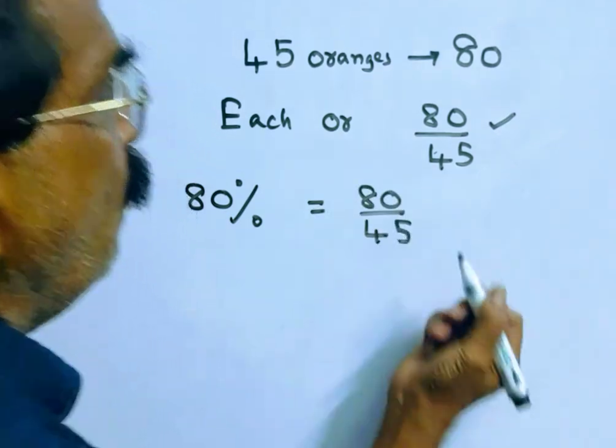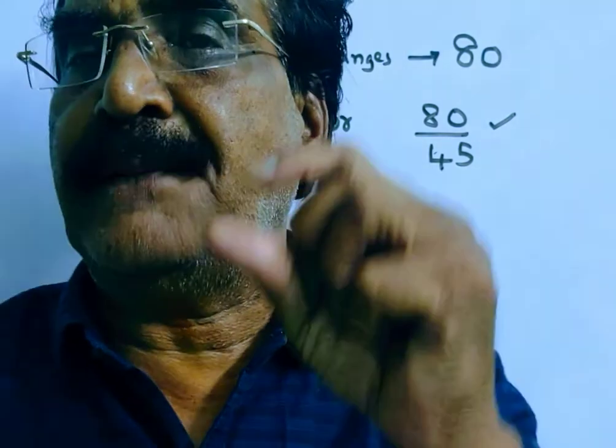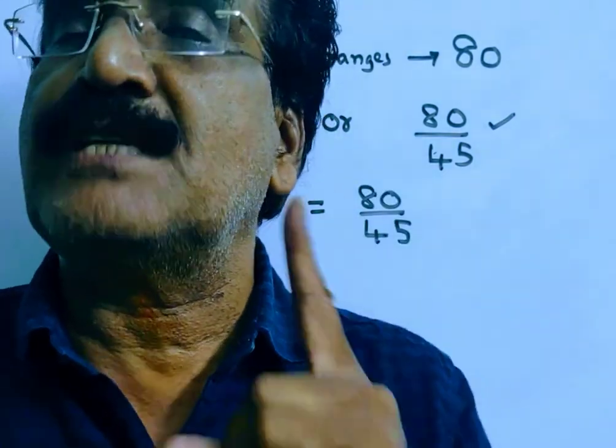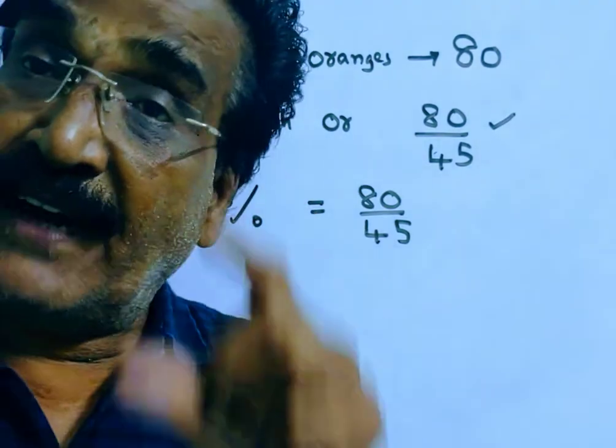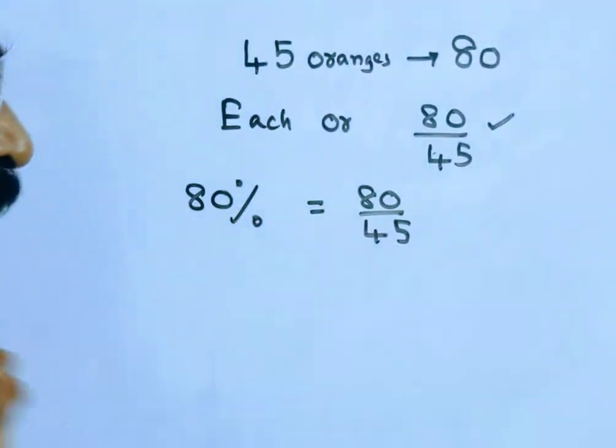Friends, now we want 20% profit. That means we have to sell at 120% of the cost price. So, we have to find 120% of the cost price.